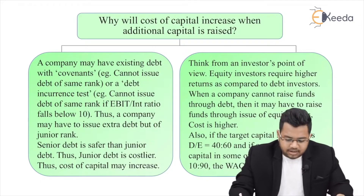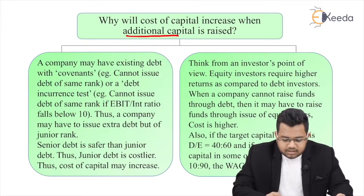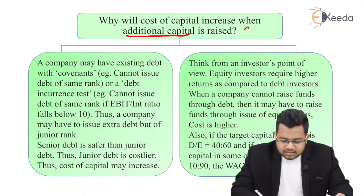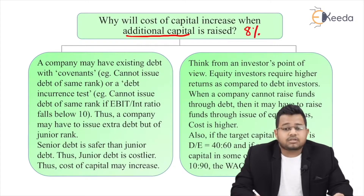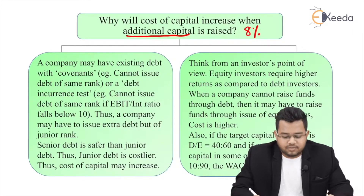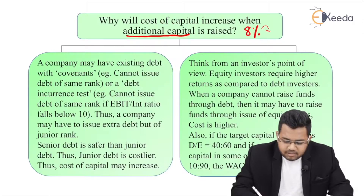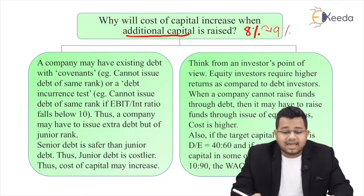Why will the cost of capital increase when additional capital is raised? For example, 8% was the weighted average cost of capital. Why will it become 9% if I raise additional capital? That is the question. There can be two cases.